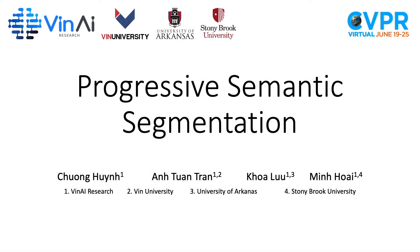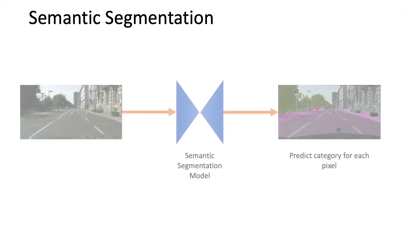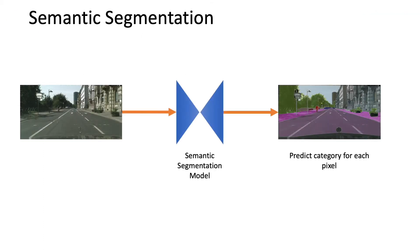We would like to present our paper Progressive Semantic Segmentation in CVPR 2021. Image semantic segmentation is the task where, with an input image, the model needs to classify each pixel to the predefined categories.